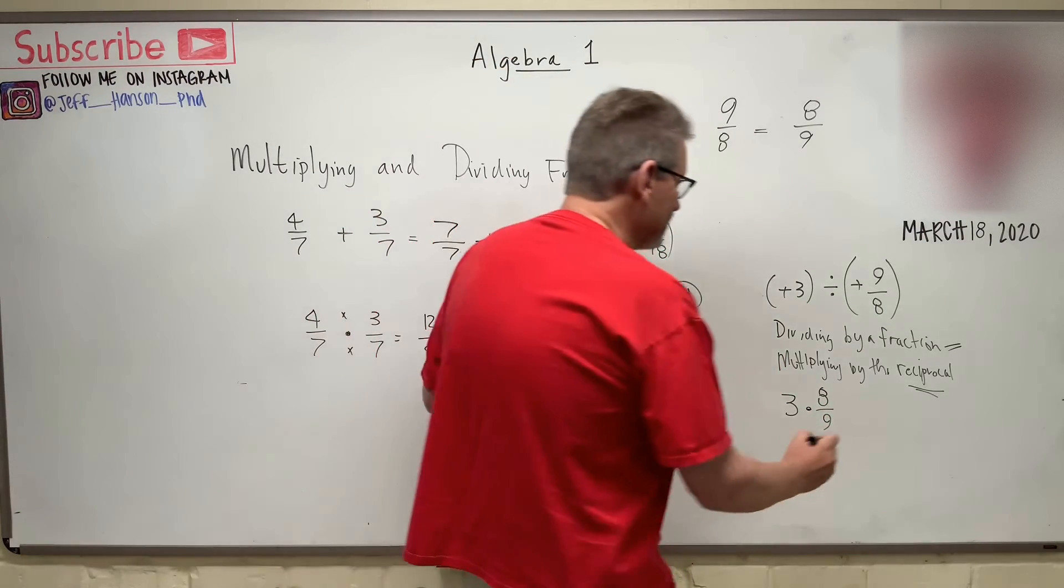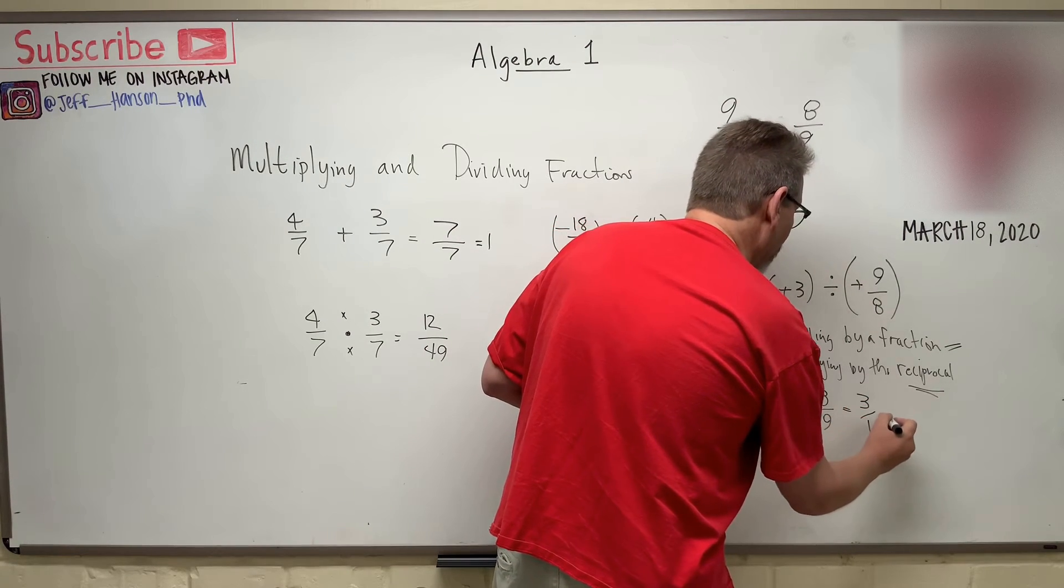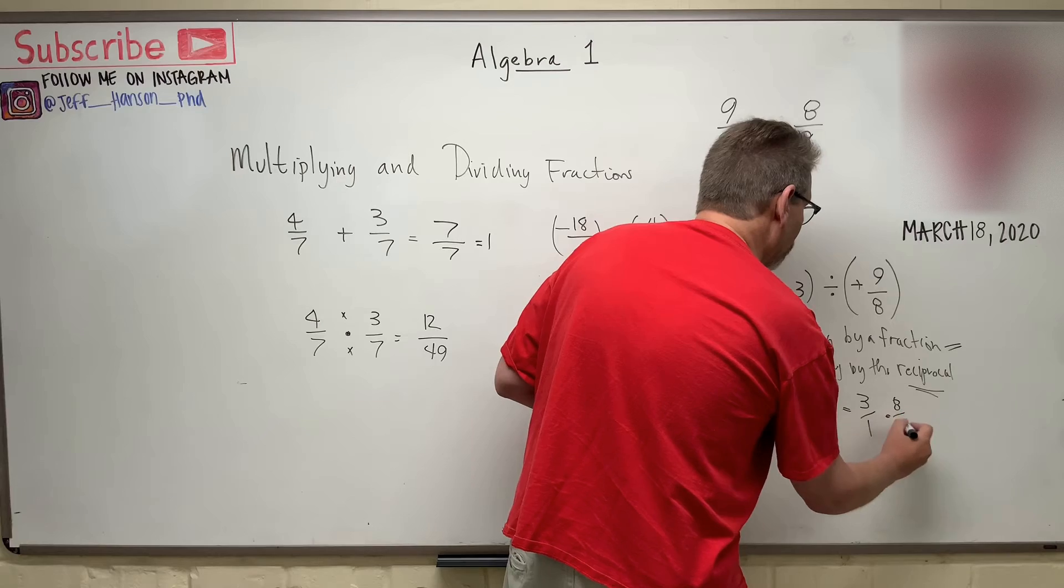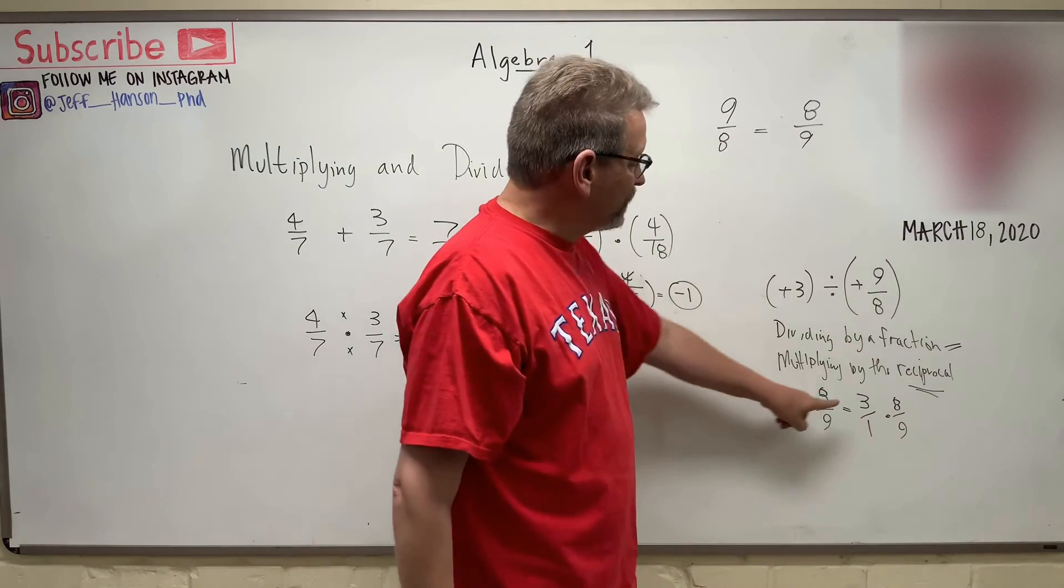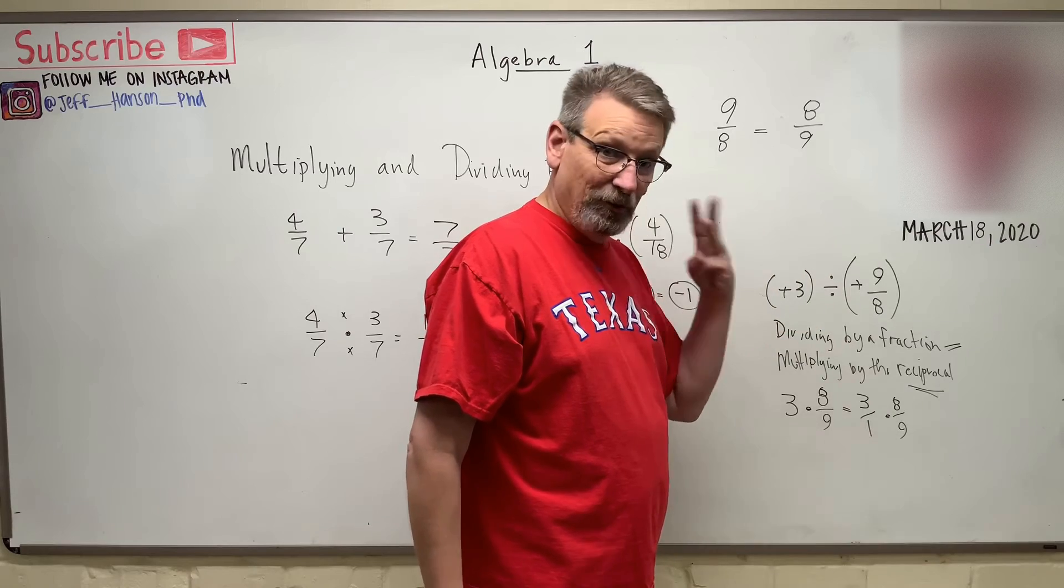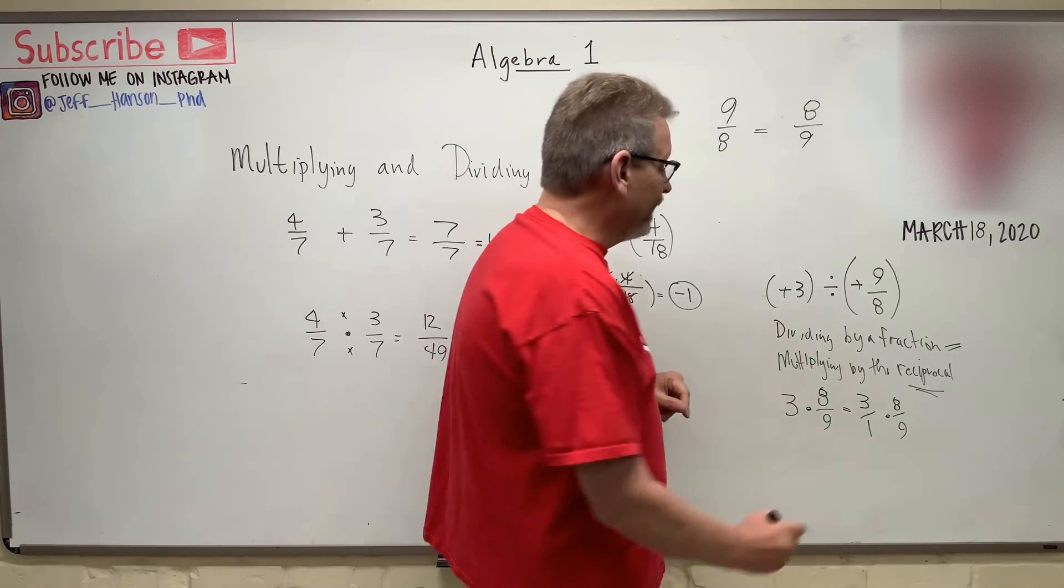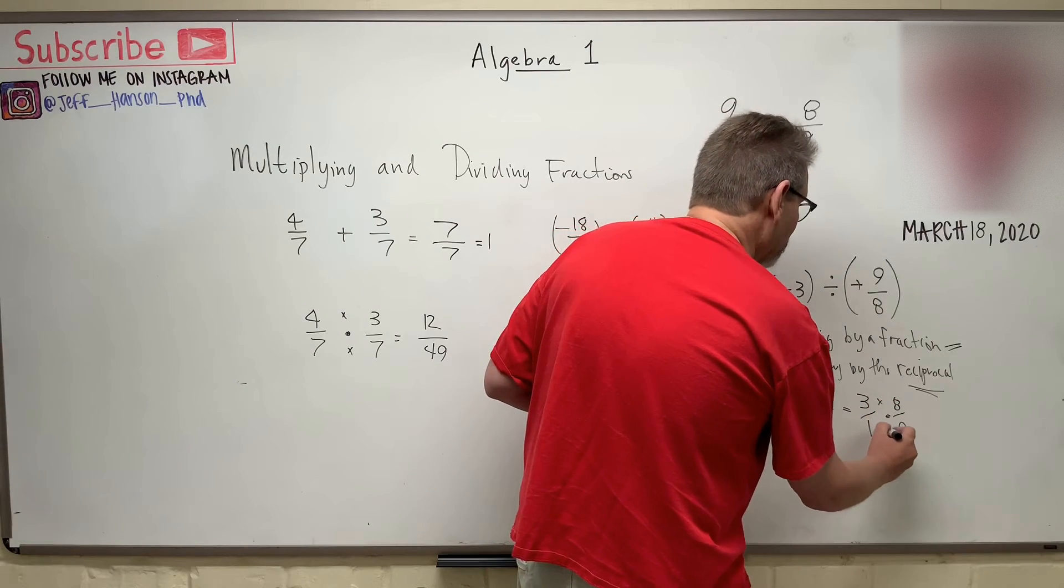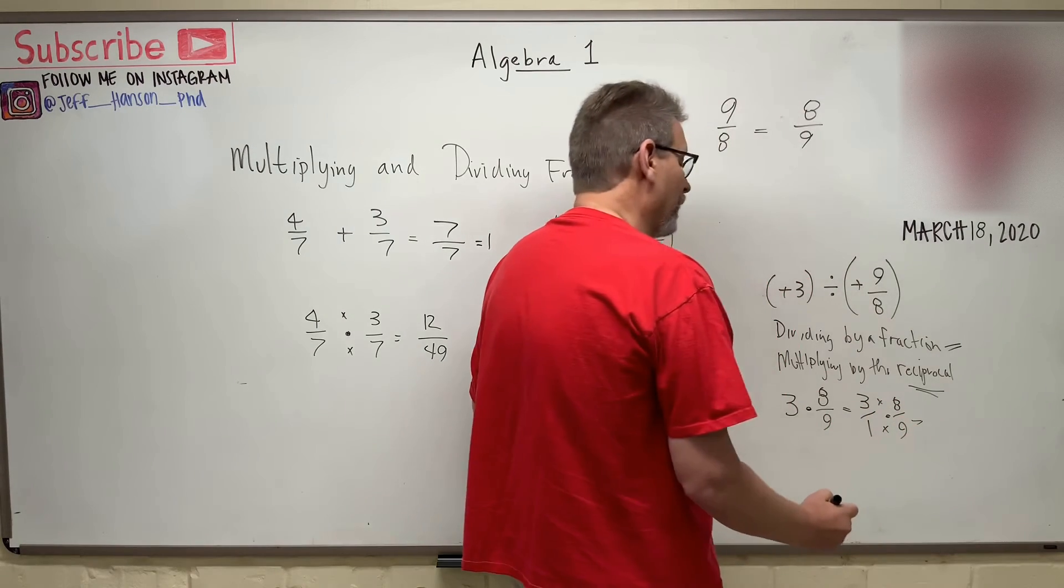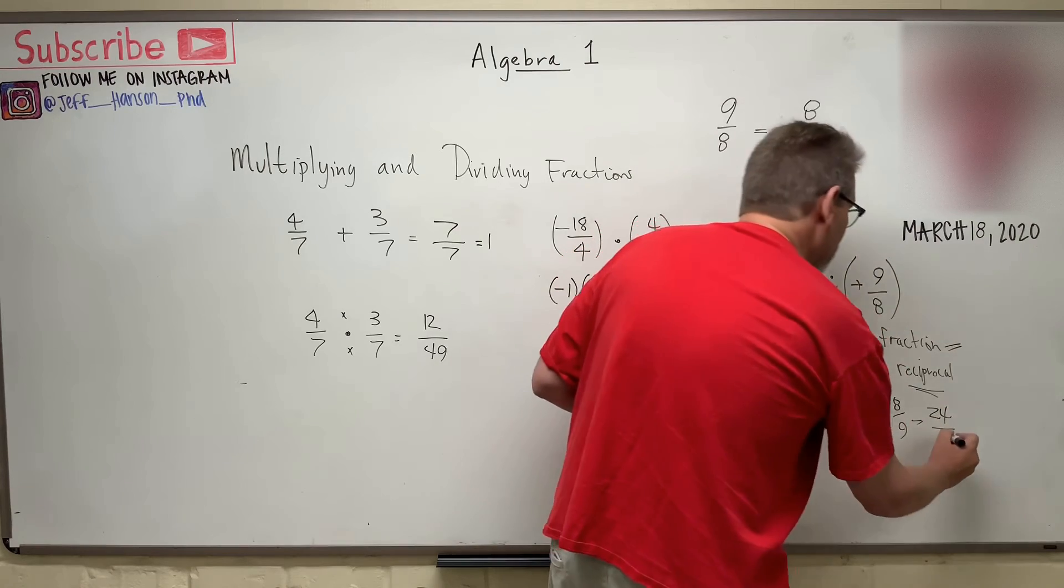Now, another way to write this is this. 3 divided by 1 times 8 over 9. Because what is 3 divided by 1? How many times will 1 go into 3? It's still 3, isn't it? That's still 3. But now, I can multiply the top and the bottom together. And what do I get? I get 24 divided by 9.